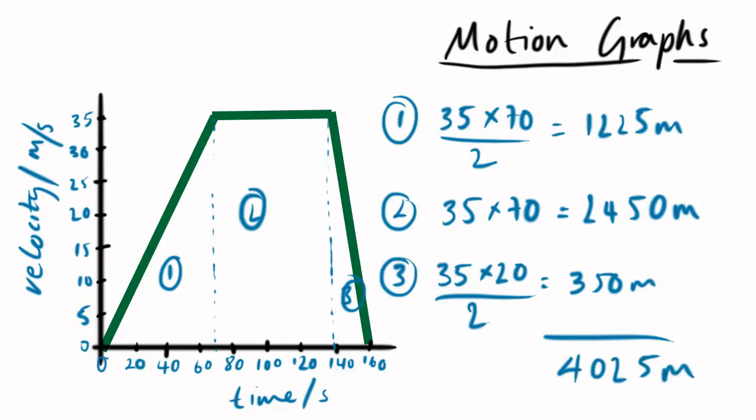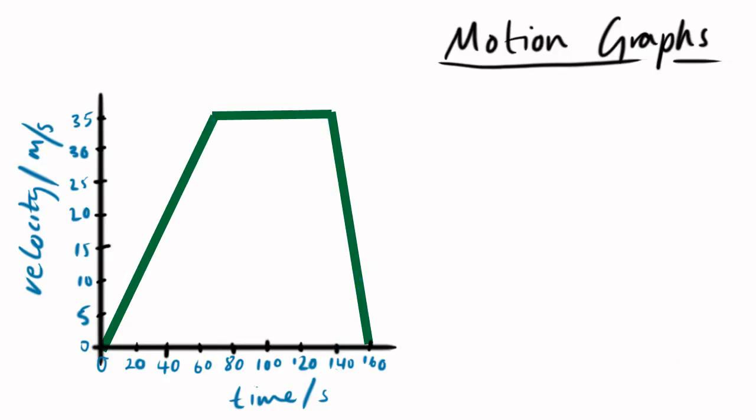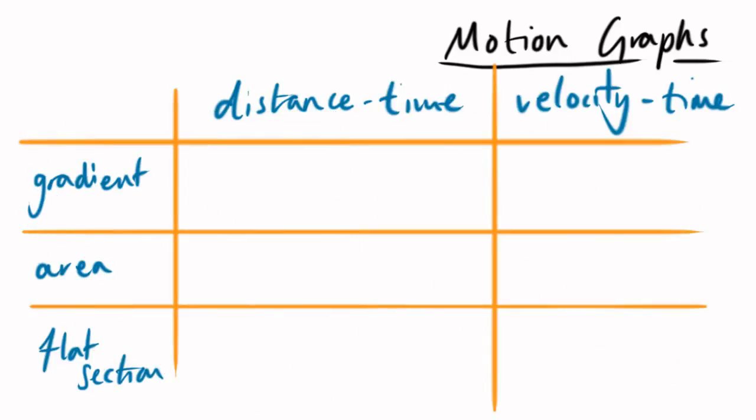So, that's pretty simple. This last slide is just a little aid memoir for you, to remember what you can find out from two types of graphs. From the distance time graph, the gradient represents the velocity. So, you can work out the velocity, or the speed. The velocity time graph, the gradient represents the acceleration.